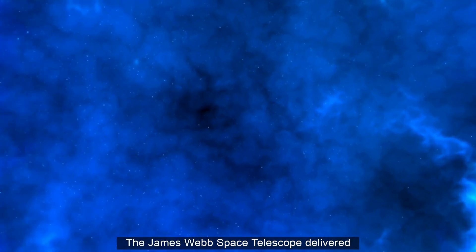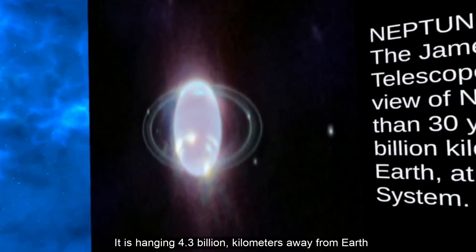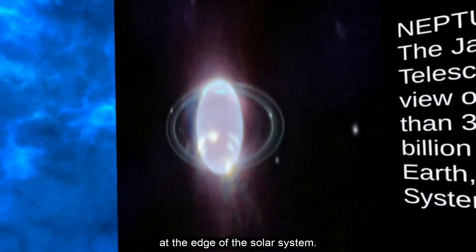The James Webb Space Telescope delivered the clearest view of Neptune's rings in more than 30 years. It is hanging 4.3 billion kilometers away from Earth, at the edge of the solar system.